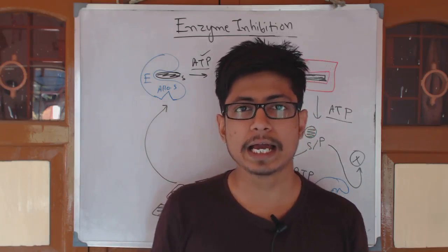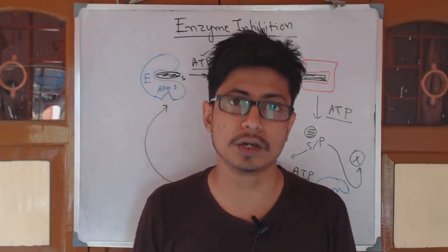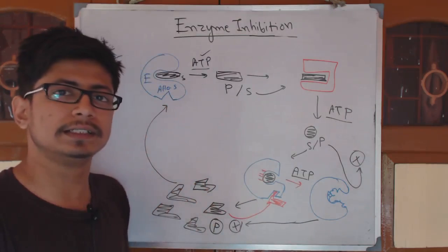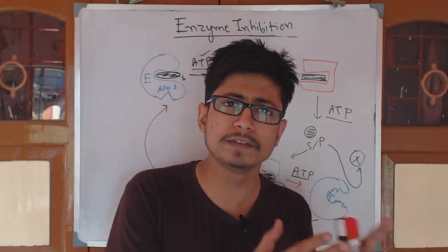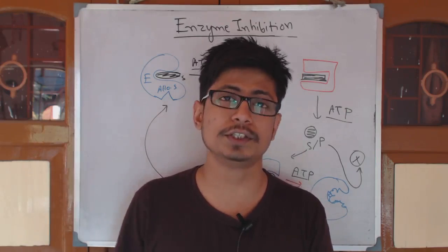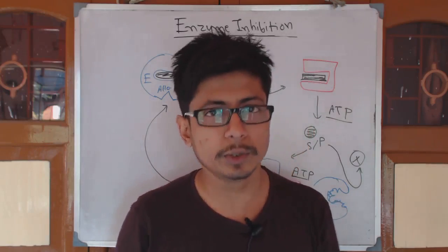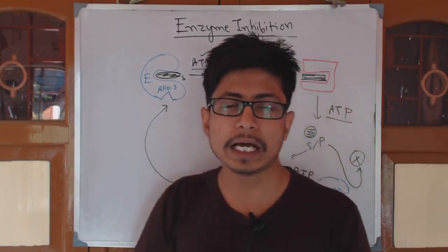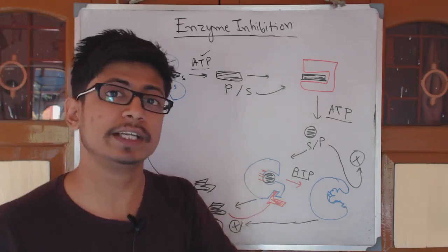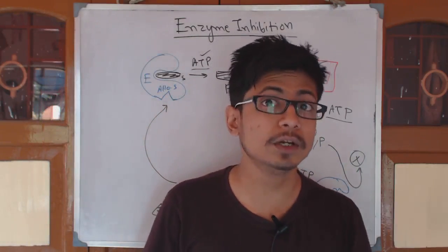This concept applies not only to enzyme feedback inhibition but also in other scenarios. For example, in bacterial operons — like the lac operon — the production of beta-galactosidase depends on whether lactose is present. Though that is not enzyme inhibition per se, it illustrates the same principle: cells always try to control the productivity and production of certain molecules.